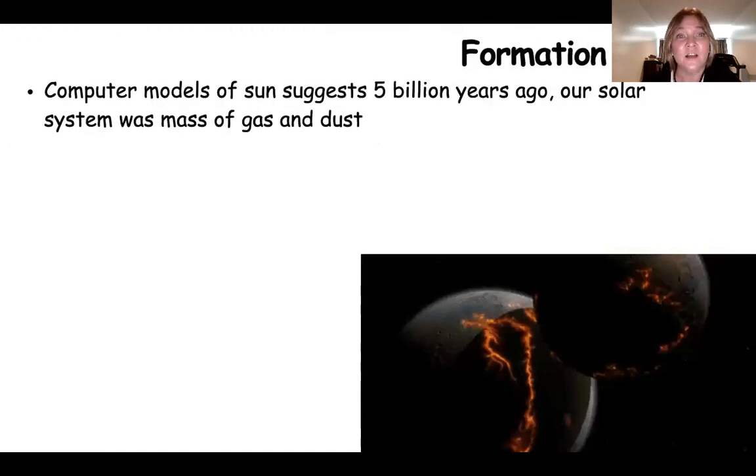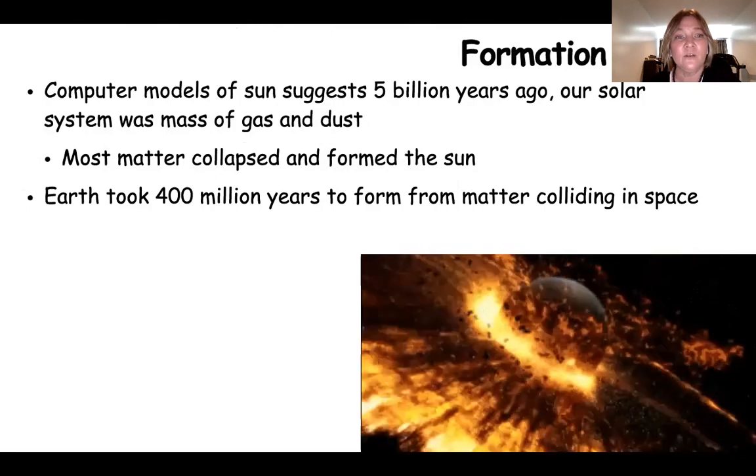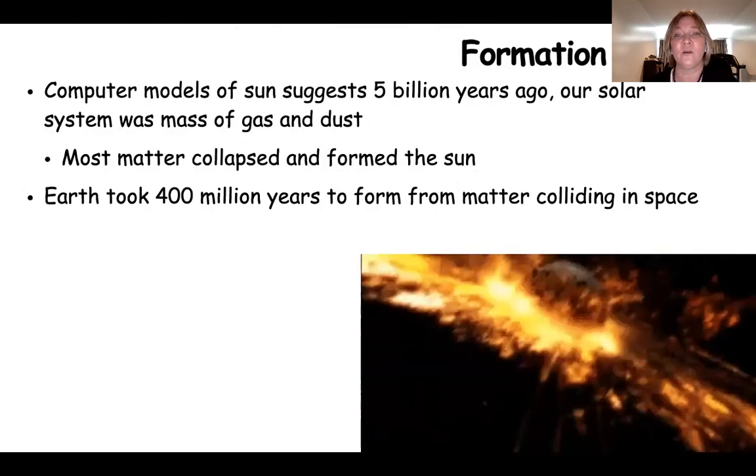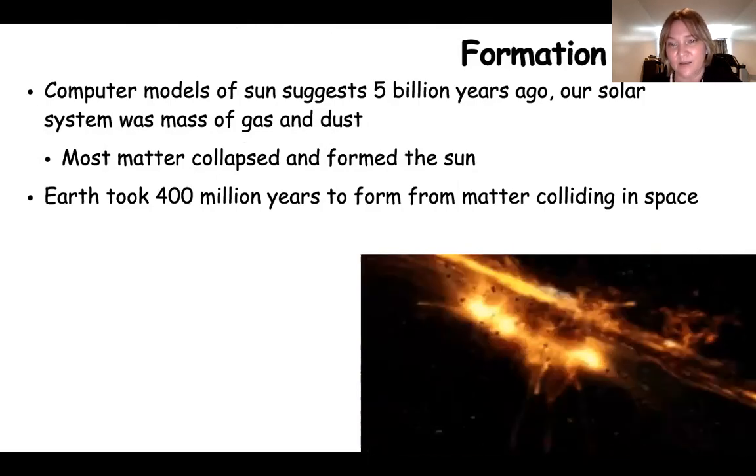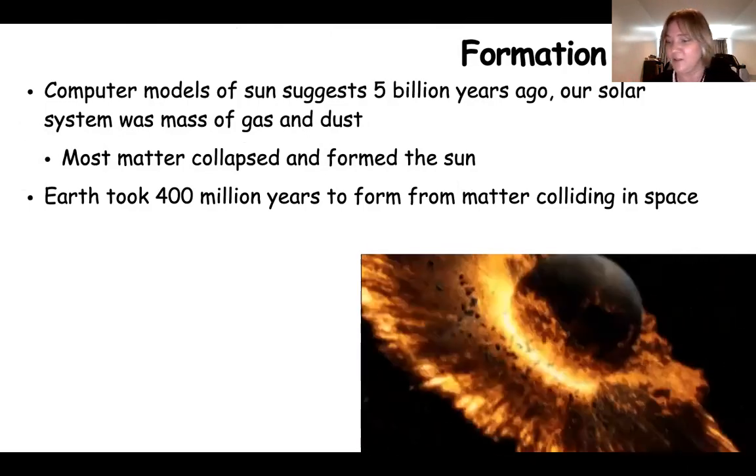Computer models of the sun suggest that 5 billion years ago, our solar system was a mass of gas and dust. You should remember this from the solar nebula theory from astronomy. Most of the matter collapsed and formed the sun. But Earth took 400 million years to form from matter colliding in space, like you see in this animation.